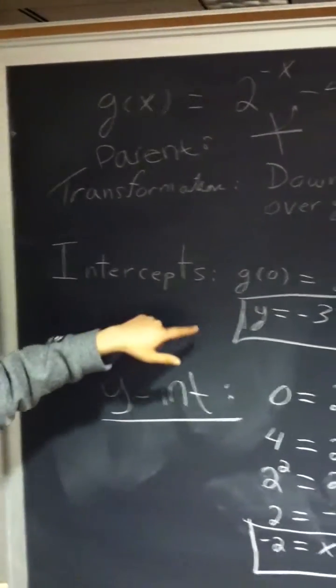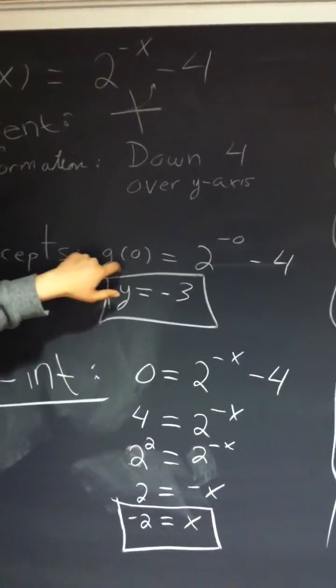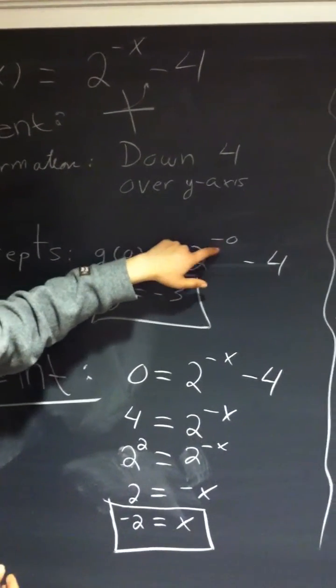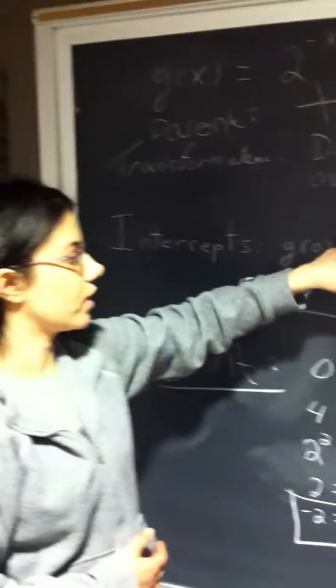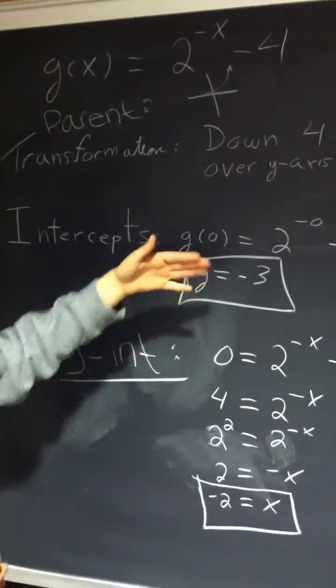My intercepts are, we're going to make x equal to 0. So it's going to be 2 to the 0, which is 1. 1 minus 4 is going to give me negative 3.